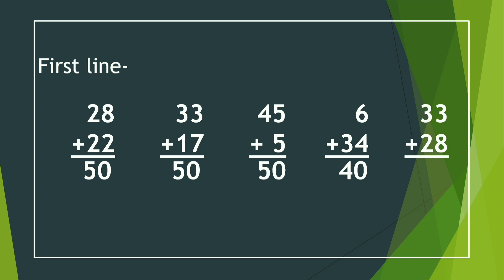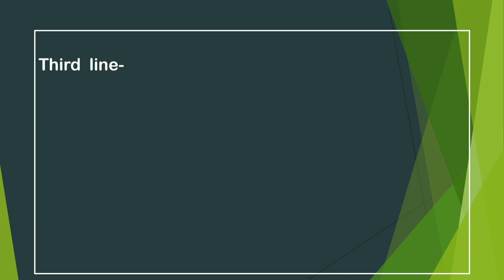Next, 33 and 28. We count after 8 up to 3, which will be 11. We take only 1 and the other 1 is added with 3: 3 and 1 is 4. We count after 4 up to 2, so it will be 61. Next, our third line's first addition is 35.